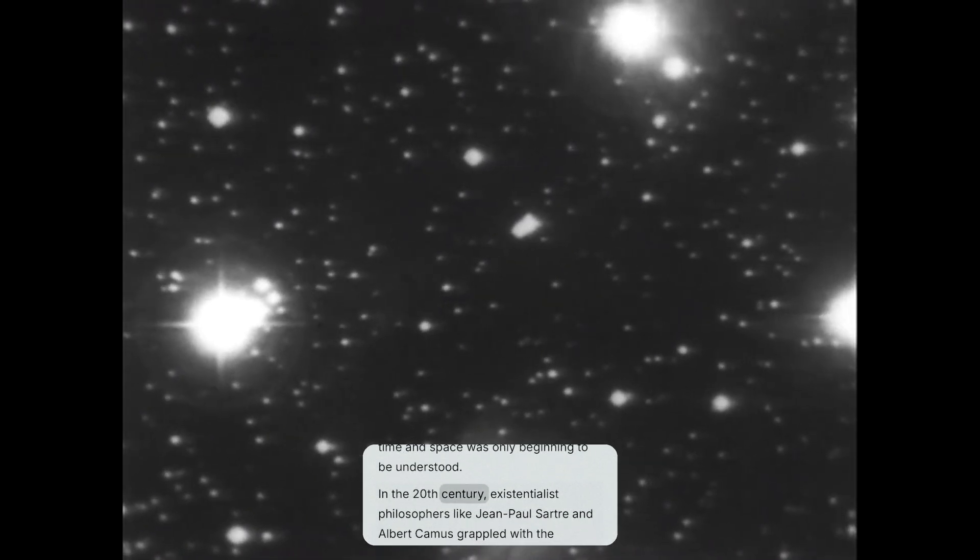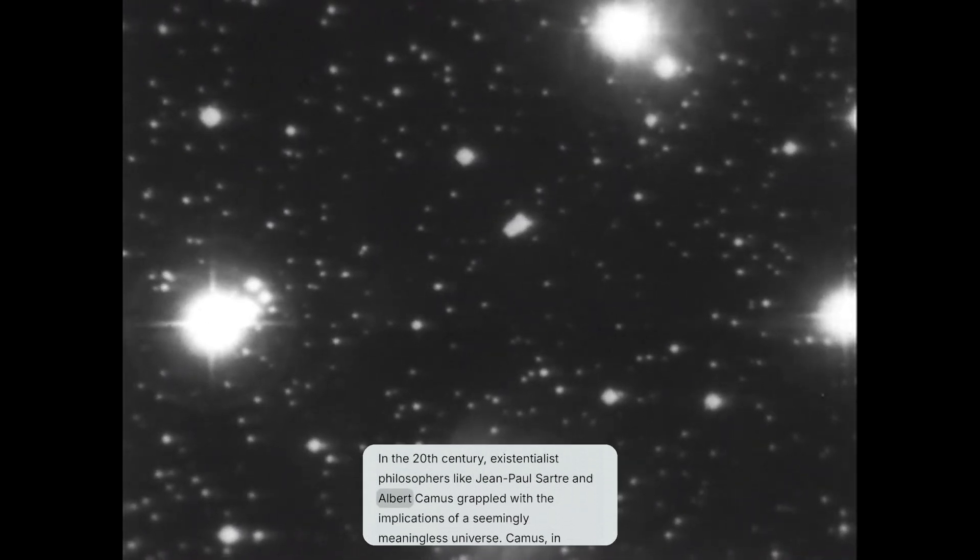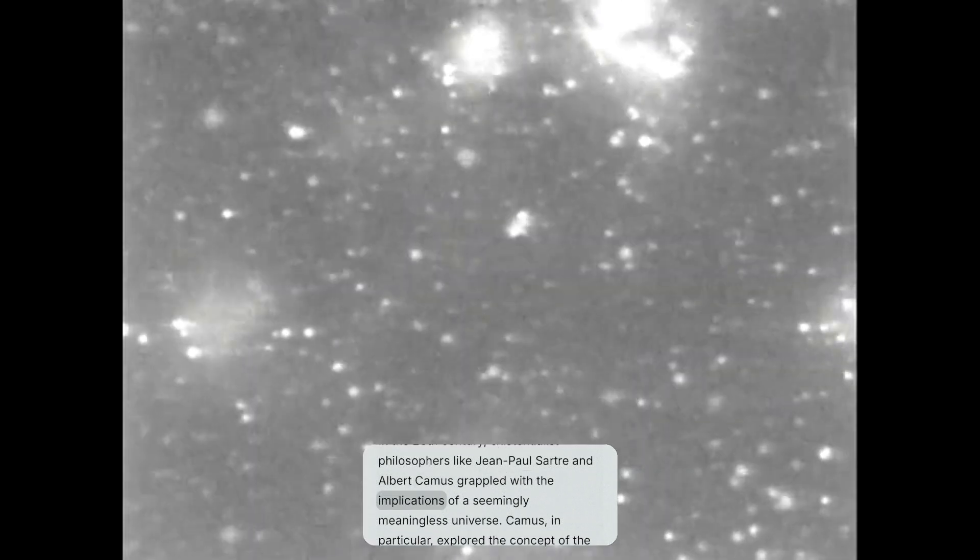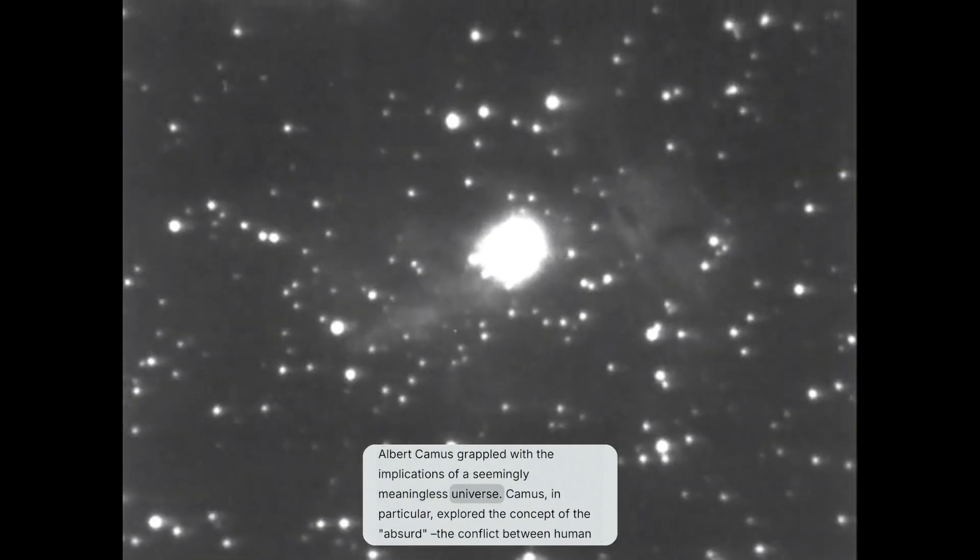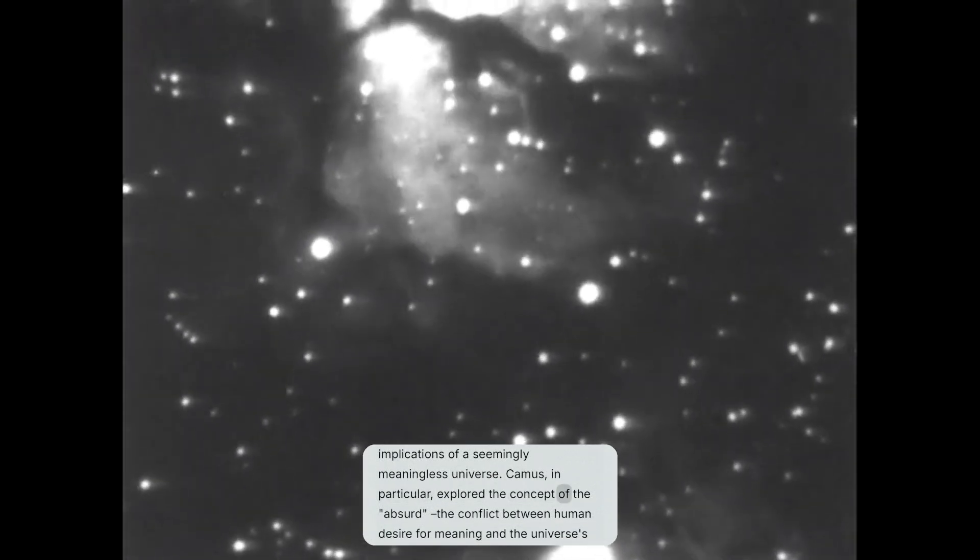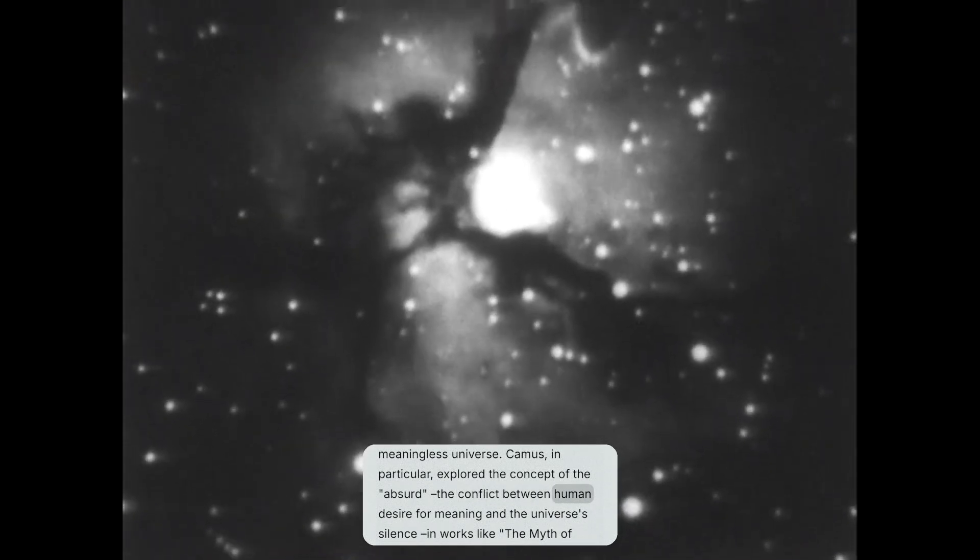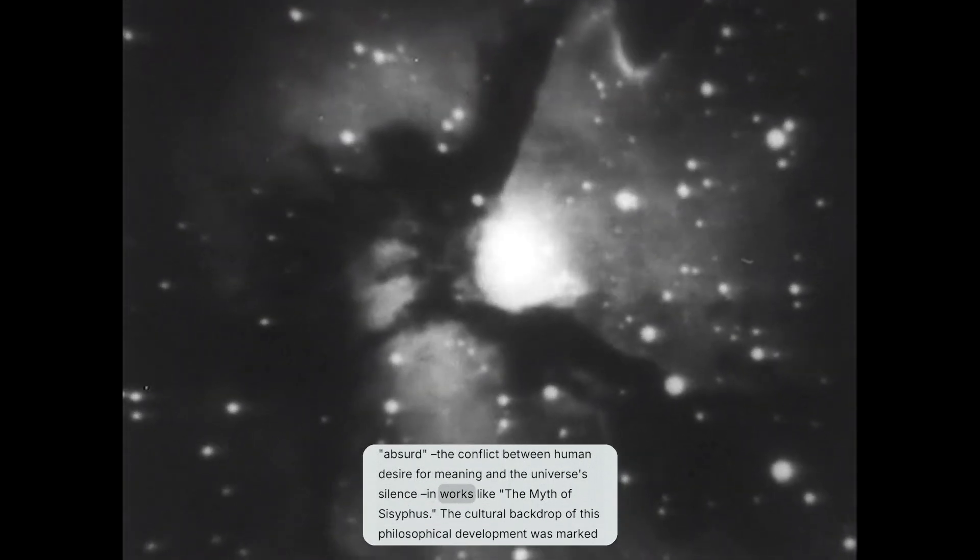In the 20th century, existentialist philosophers like Jean-Paul Sartre and Albert Camus grappled with the implications of a seemingly meaningless universe. Camus, in particular, explored the concept of the absurd, the conflict between human desire for meaning and the universe's silence, in works like The Myth of Sisyphus.